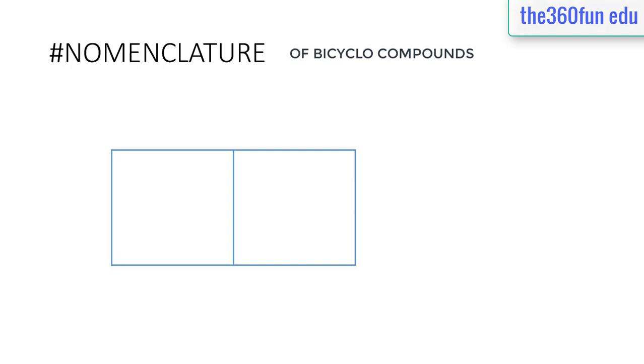Hello YouTubers, this is 360 Fun. In today's tutorial we'll be talking about the IUPAC nomenclature of bicyclo compounds. Bicyclo compounds are basically cycloalkanes, but they have two cycloalkanes attached together, as we can see in this example.